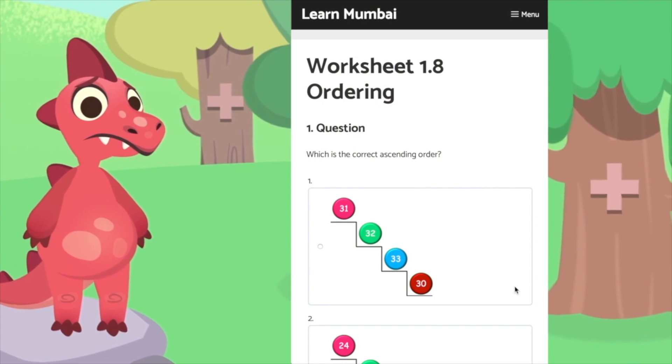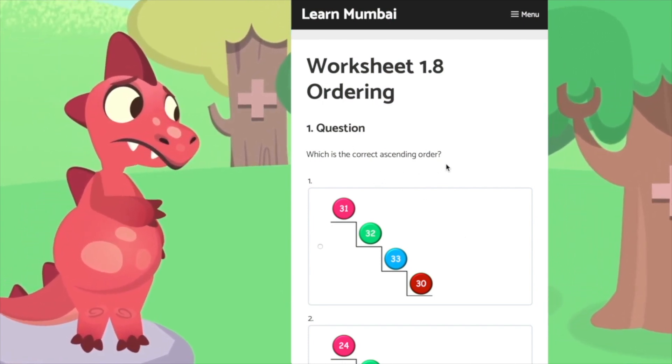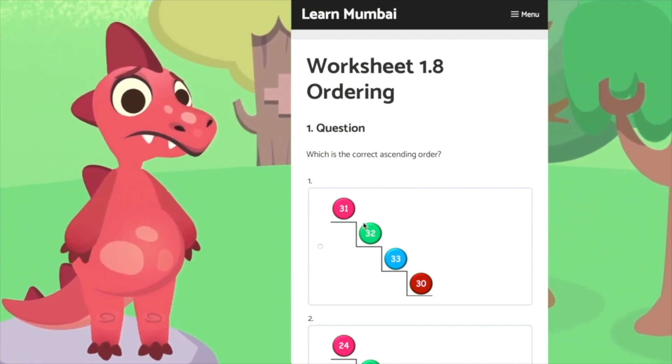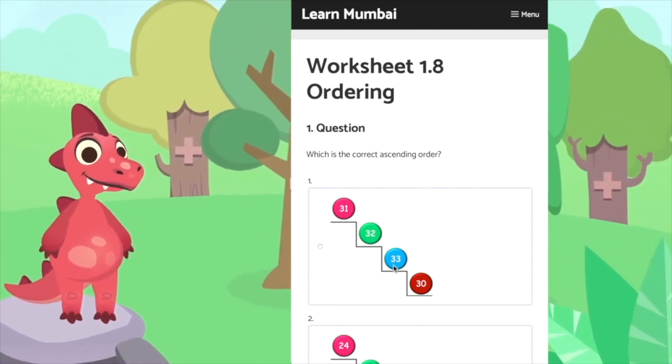Let's find the right ascending order. 31, 32, 33, 33.